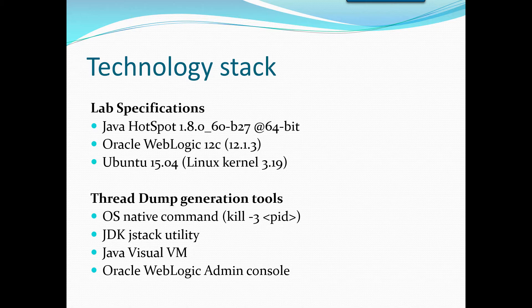The tools we're going to use for thread dump generation — essentially four tools today. The OS native command, which is kill -3 with the Java PID. The JDK JStack utility, which I find very useful, especially on Windows environments. Java VisualVM, which is one of my preferred tools for typical troubleshooting on Java technology. And of course the Oracle WebLogic admin console, which can be useful for certain scenarios. So let's get started.